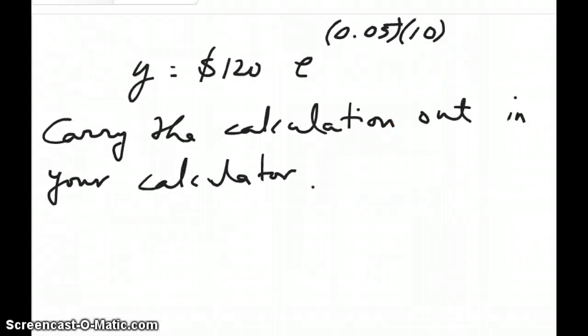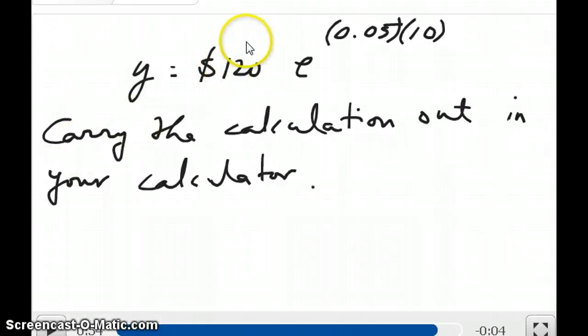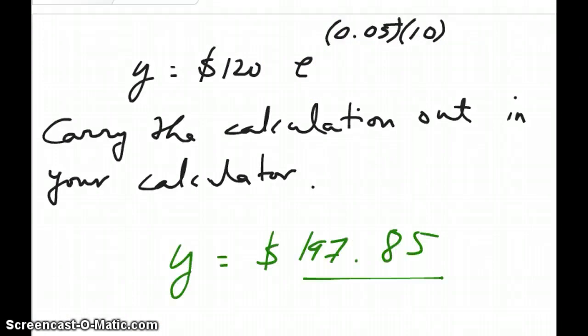Another example would be to try the compound interest calculation that we did earlier. Again, the values that you would enter are 120 and then e to the power of 0.05 times 10. And what you should get in the end should be $197.85.